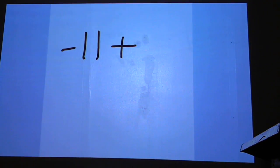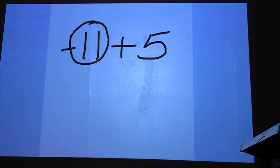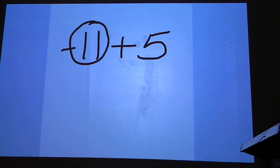Negative eleven plus five. If you start with a negative number and you're adding a number that's less than what the absolute value is — the absolute value of a number is just the positive version of it — five is less than eleven, so you're still going to end up with a negative number.